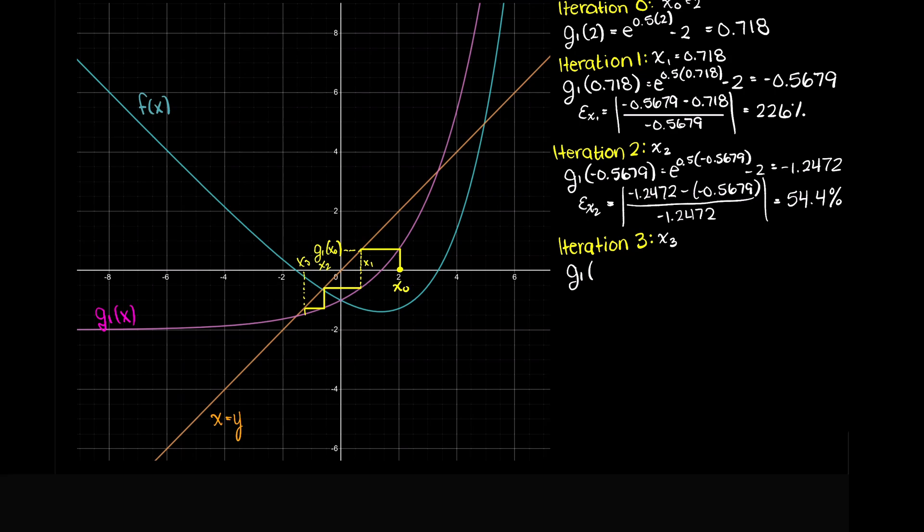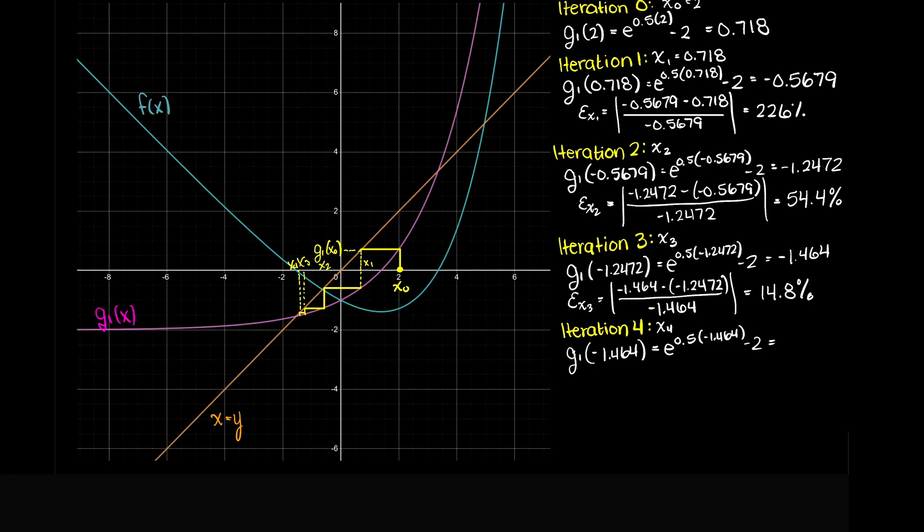Repeating for iteration 3 we get minus 1.464, and that gives us a percent error of 14.8%. So, because this is still above our required error, we need to repeat at least one more iteration. Plugging x3 into our g function, we get x4 is minus 1.519, and that results in an error of 3.62%, which is accurate enough for us.